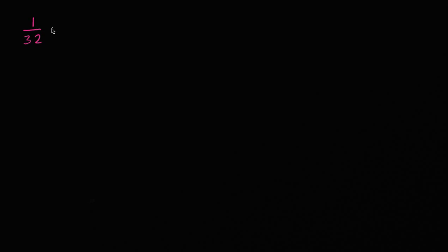So let's say my expression is 1/32 times 2 to the t power. This is a fairly straightforward exponential expression, but let's say we want it in the form a times b to the t over 10 power minus 1. And so you're probably immediately saying, why would I ever want to take something nice and simple like this and turn it into this beastly thing?